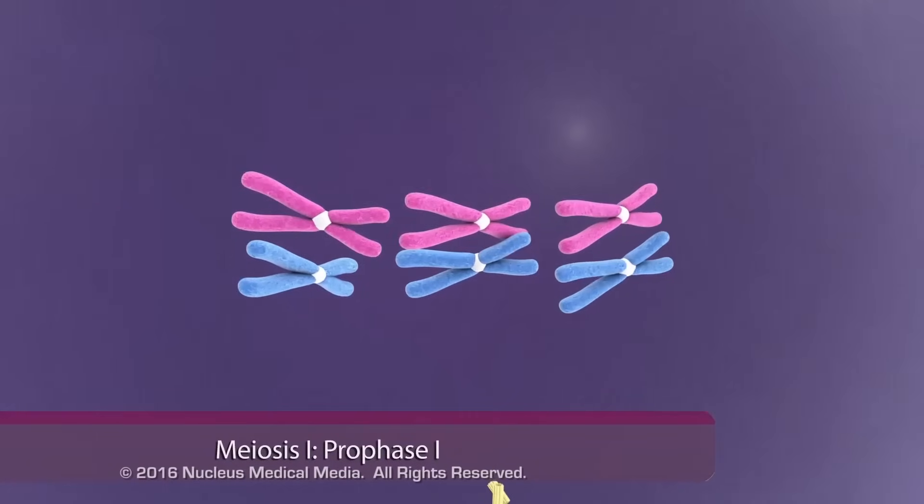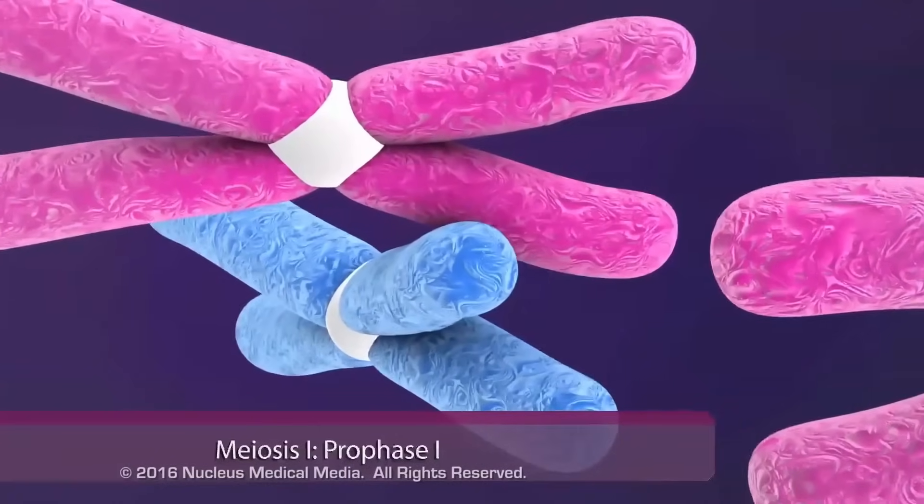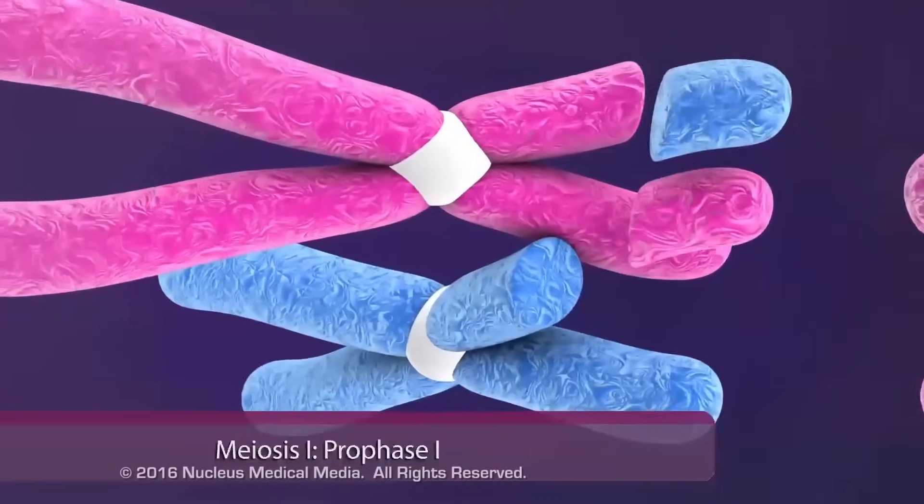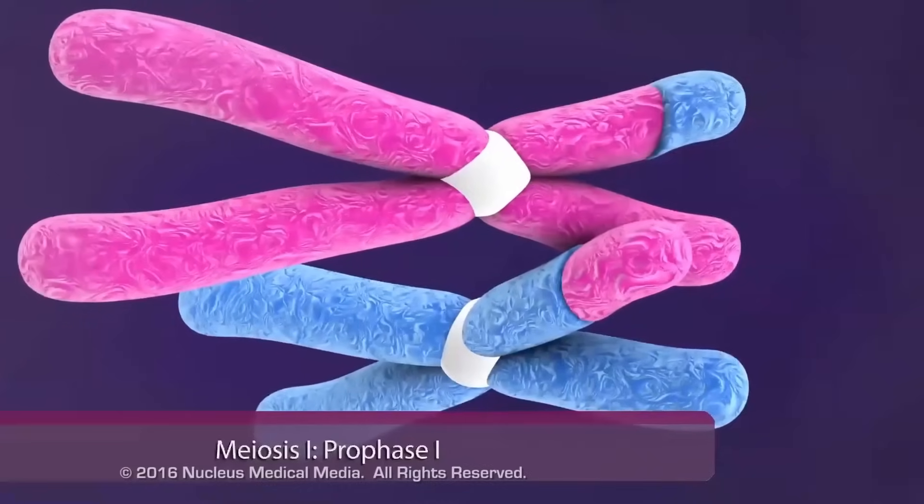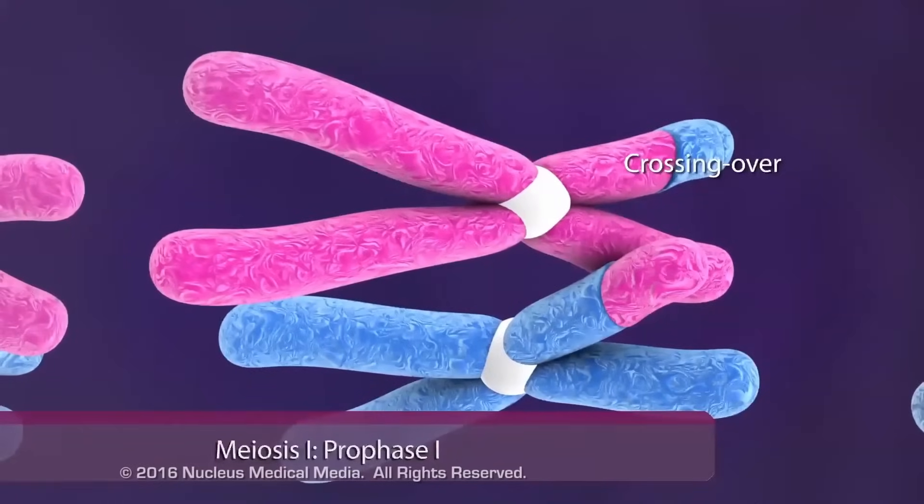Late in prophase I, chromatids in each pair break and exchange corresponding sections of DNA, in a process called crossing over, thus creating new combinations of genes.